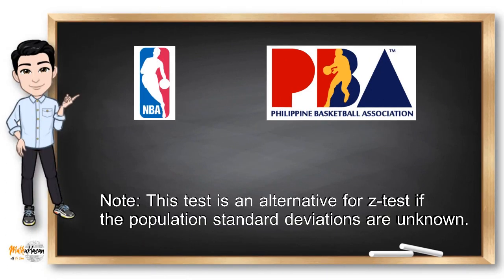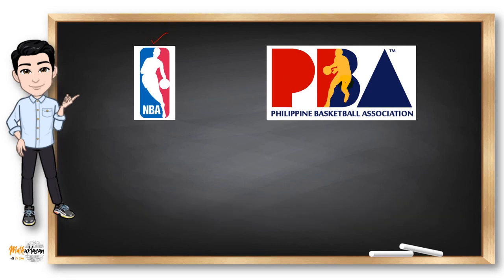we need to prepare one independent categorical variable that has two levels or groups. In this case, the first group is the set of NBA players and the second group is the set of PBA players. So what if I'm trying to compare the average height of PBA and NBA players? The dependent variable is the height, which is an example of a continuous variable.